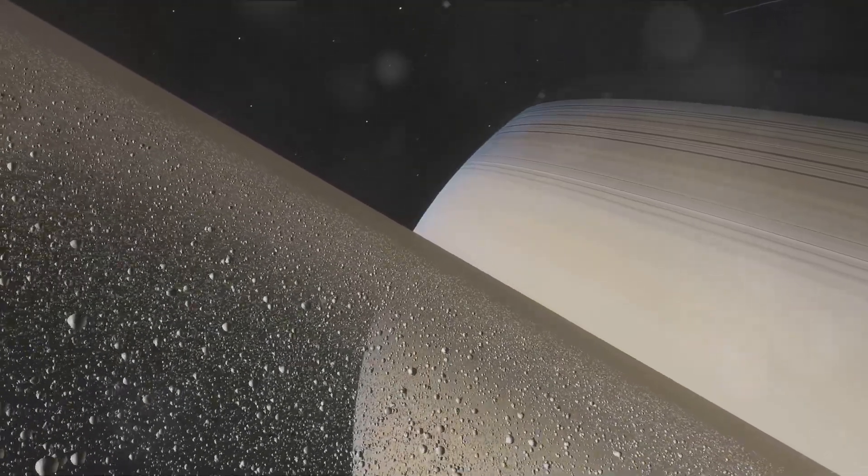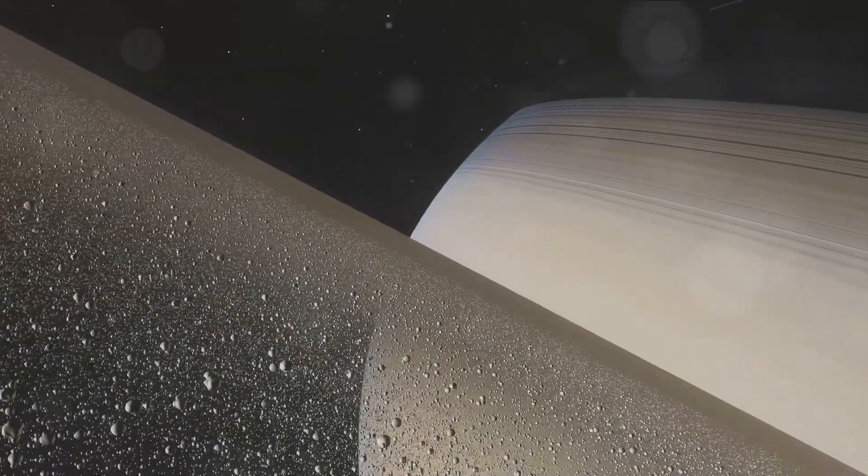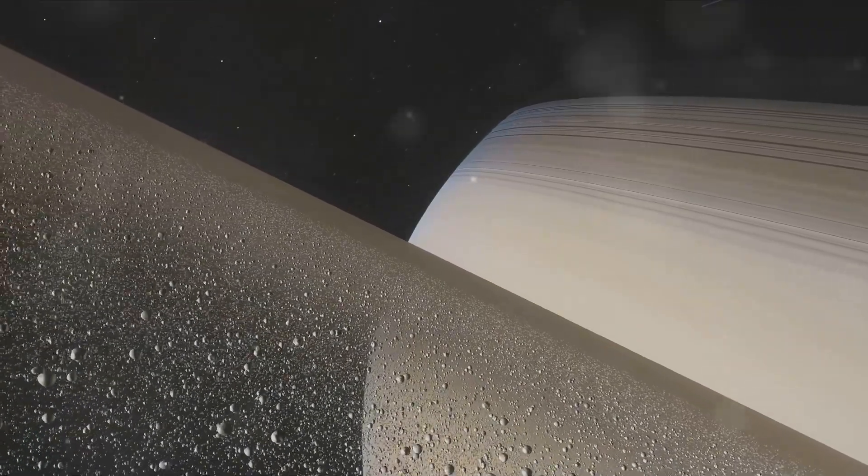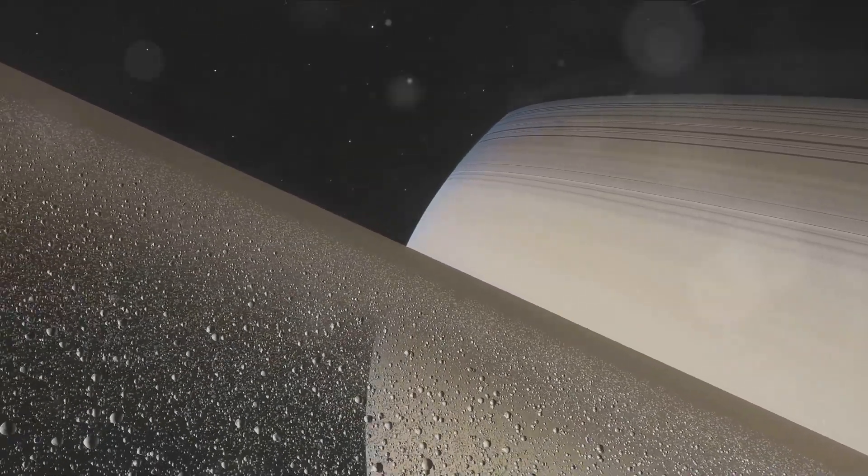Uranus, the ice giant with a unique sideways rotation, and Neptune, the furthest planet from the sun known for its intense winds, complete our tour of the planets.